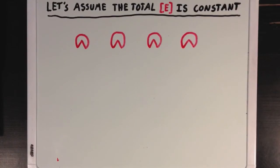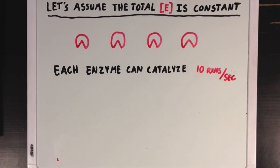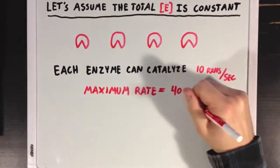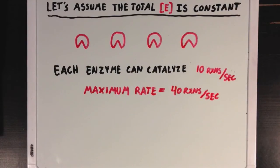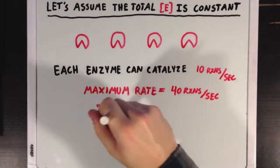If we say that we only have 4 enzymes here, and each enzyme can work at a speed of about 10 reactions per second, that would mean that the absolute maximum rate of our reaction would be 40 reactions per second. This rate we would call Vmax, or our max speed.